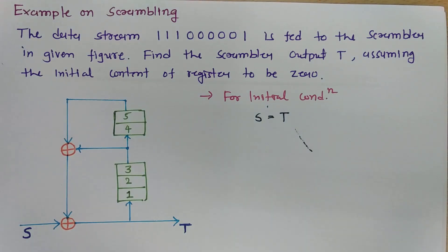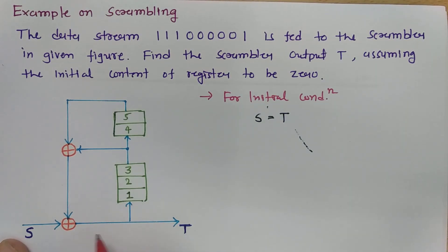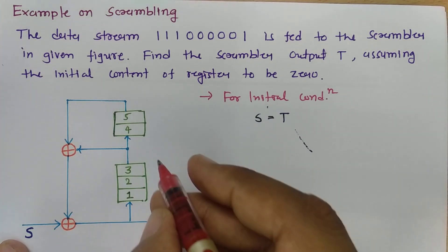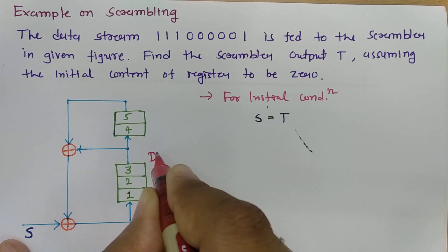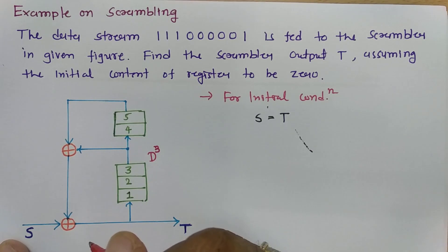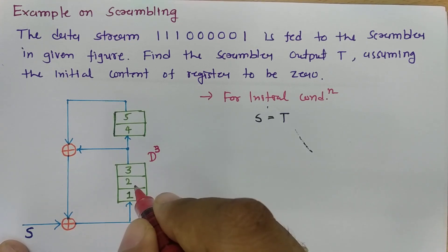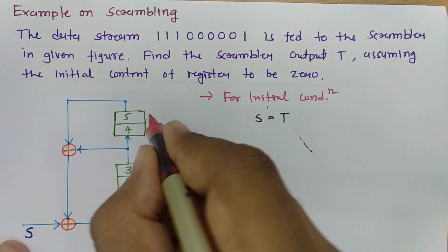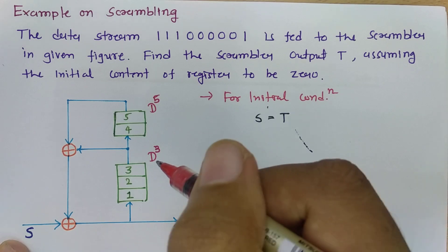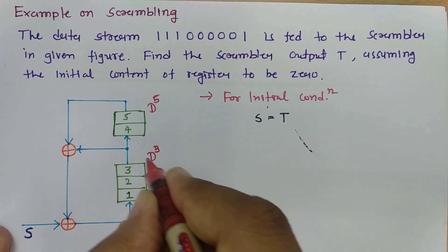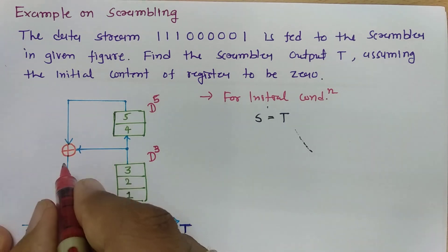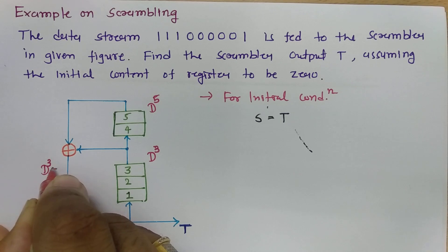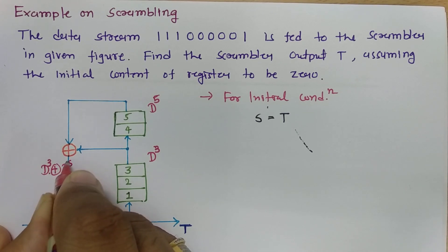Now what happens is, as you give the next bit, that bit will shift over into these bits. So here we have the d³ bit. When it gets shifted next time, this bit will come here — that is how shifting is done. And over here this bit is the d⁵ bit. So ultimately, when you see this feedback, it is getting added. That feedback will be d³ mod-2 sum of d⁵.